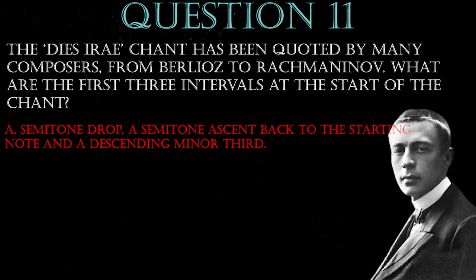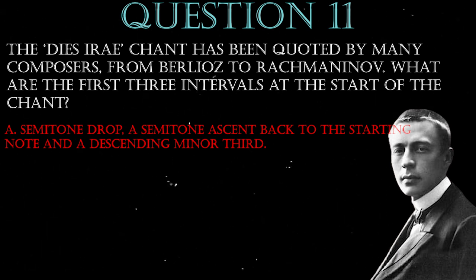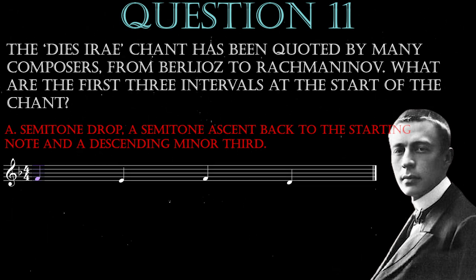In D minor, we're starting on F. A semitone drop, a semitone ascent back to the starting note, and then a descending minor third.